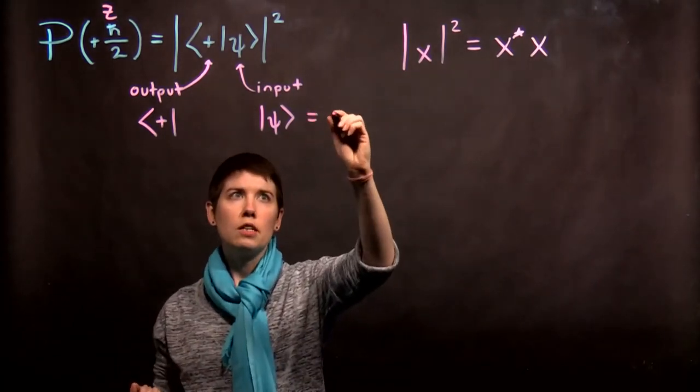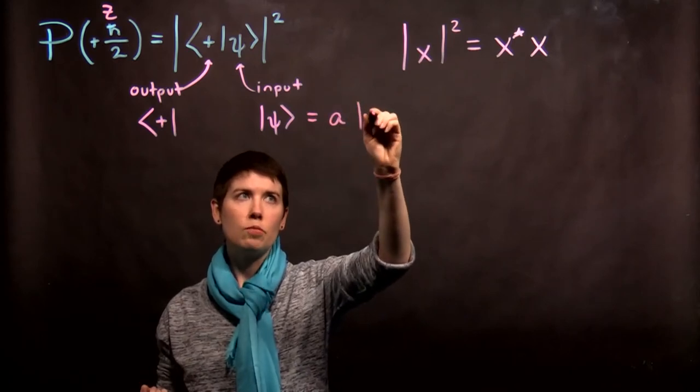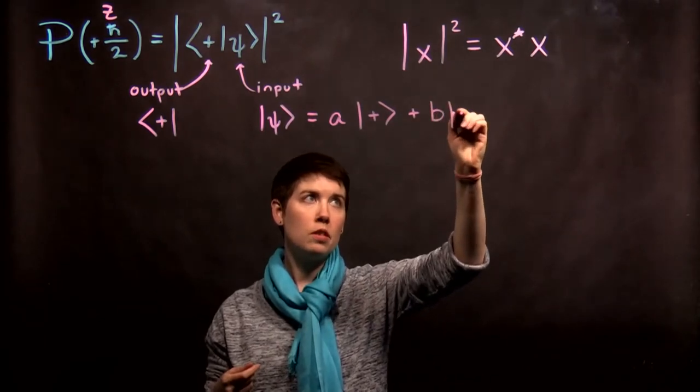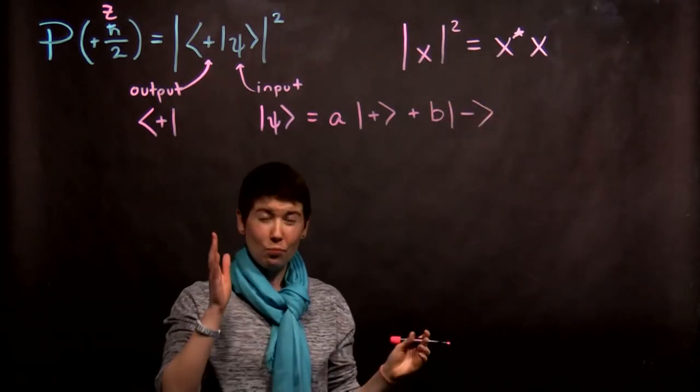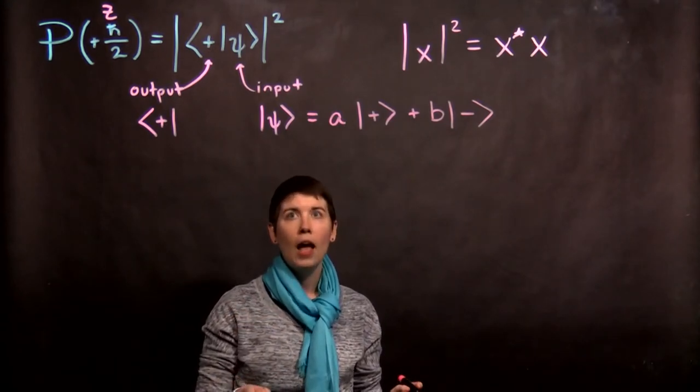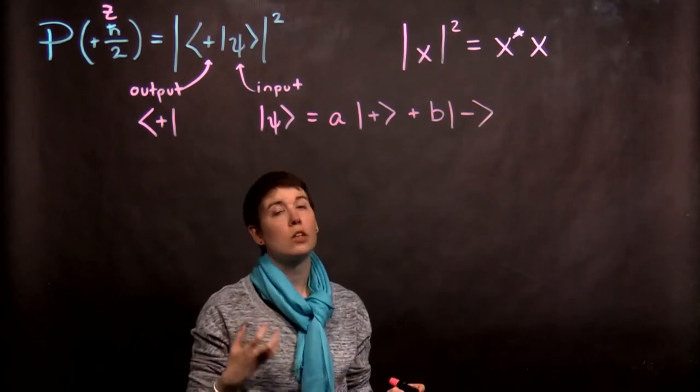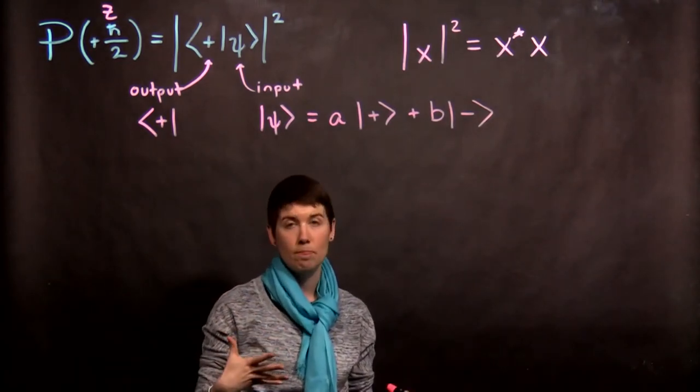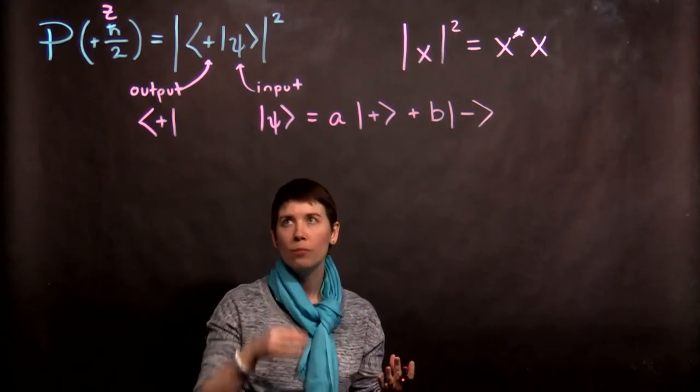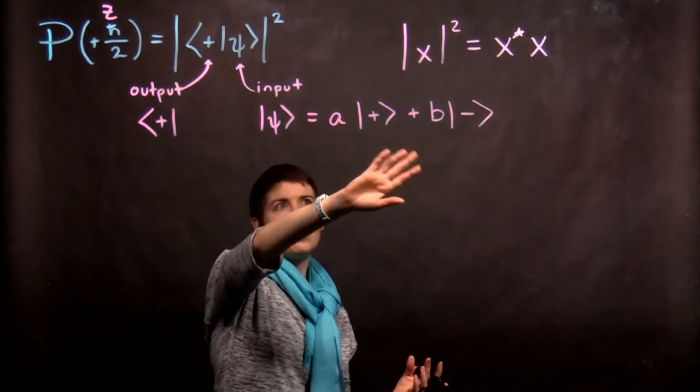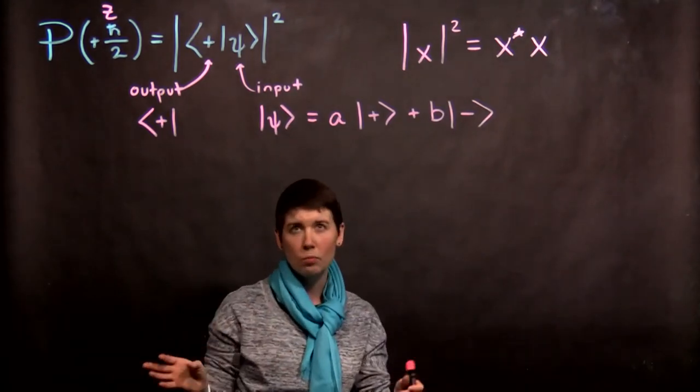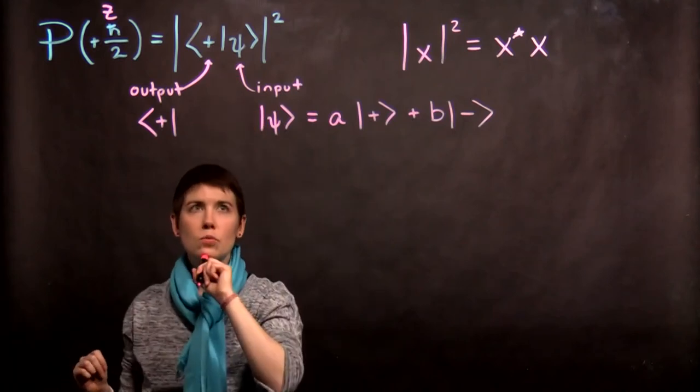So what that's going to look like is some value times spin up in the z basis, plus spin down. Now, something that's key here is that this must be normalized. And if it's normalized, that gives us a certain constraint on a and b. If our ket is not normalized, then this isn't going to work out. So let's just not actually specify what a and b are right now, but just assume that it's normalized.